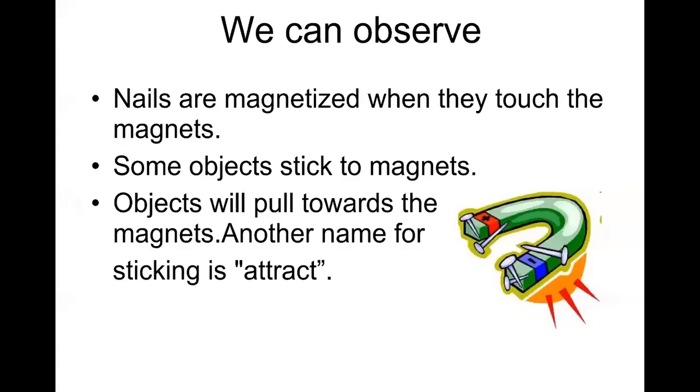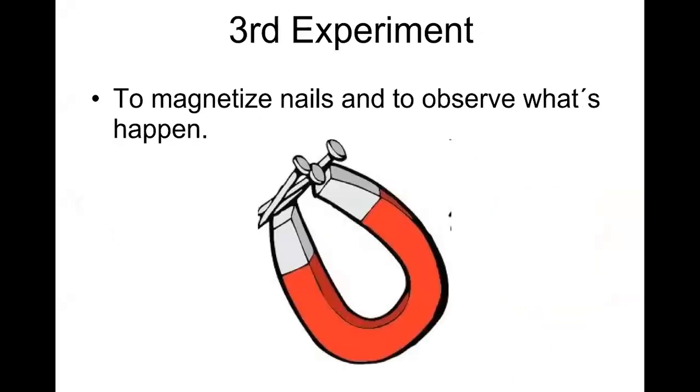We can observe that nails are magnetized when they touch the magnets. Some objects stick to magnets, some objects pull to where the magnets are. Another name for sticking is attract.